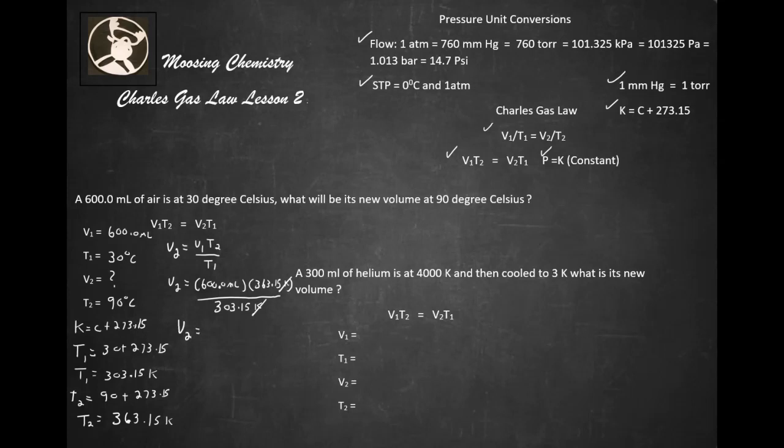And our new volume is going to be, let's do the math: 600 times 363.15 divided by 303.15, and that gives me 718.75 milliliters.